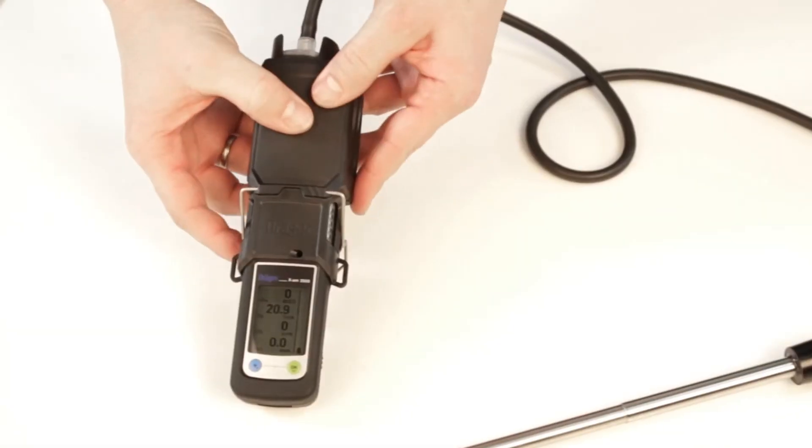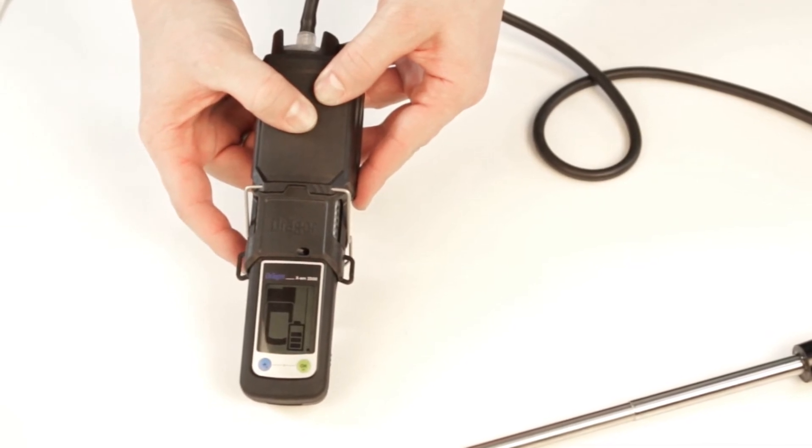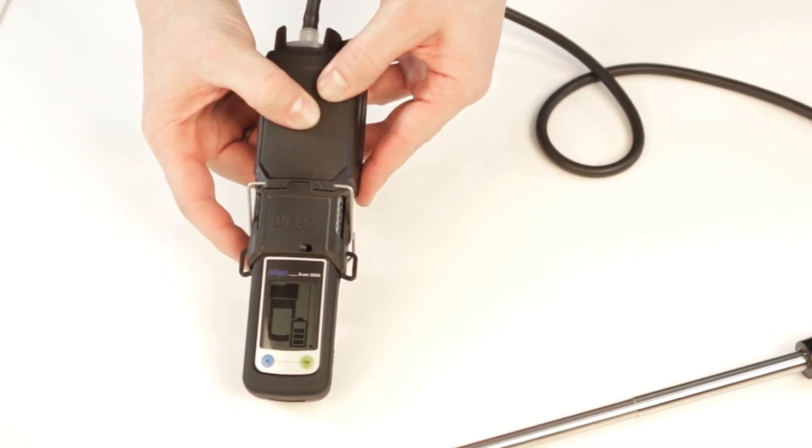Once the pump and the device are properly connected, a self-test is automatically initiated. The pump starts and the display shows the following symbols in succession: the battery status of the pump, the flow check.